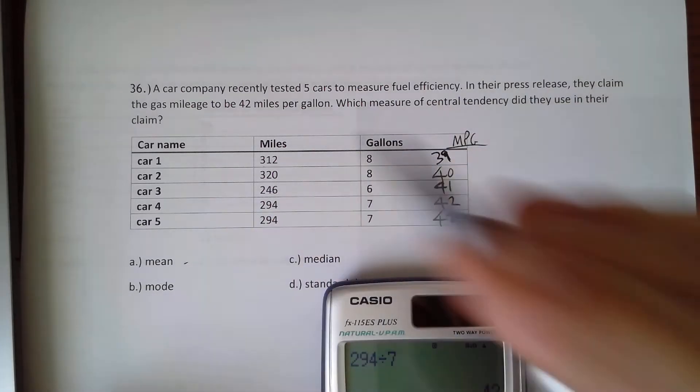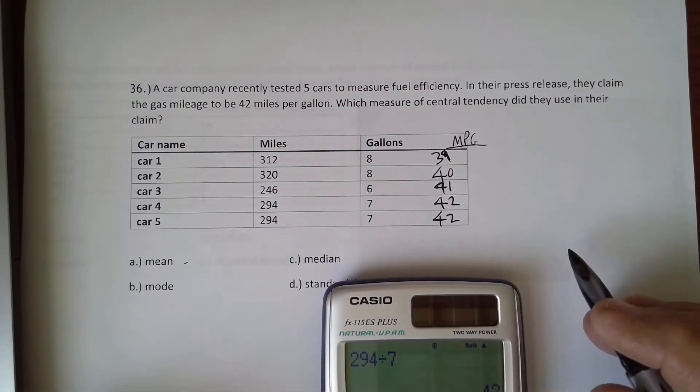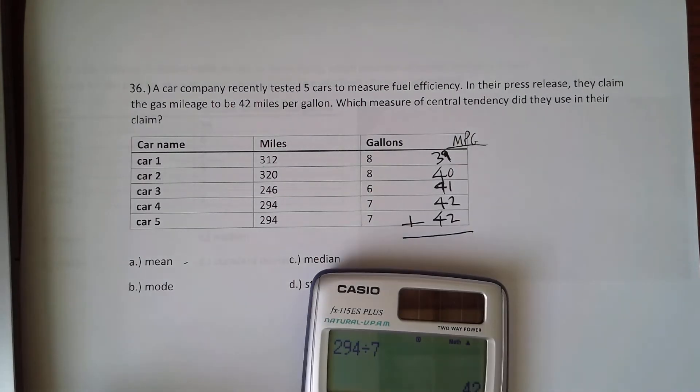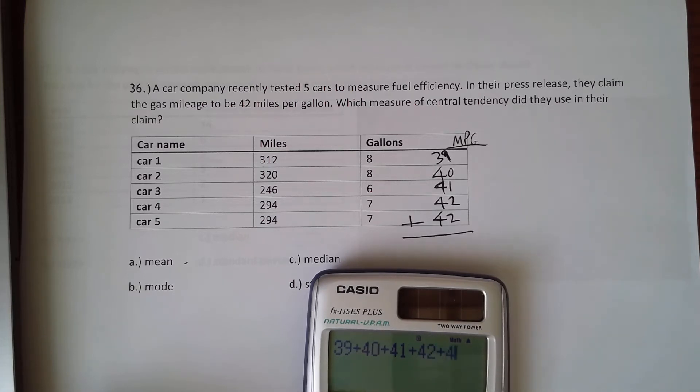Let's figure out the mean. The mean just means the average. So the average means we're going to add them up. So let's add all of those up: 39 plus 40, plus 41, plus 42, plus 42.